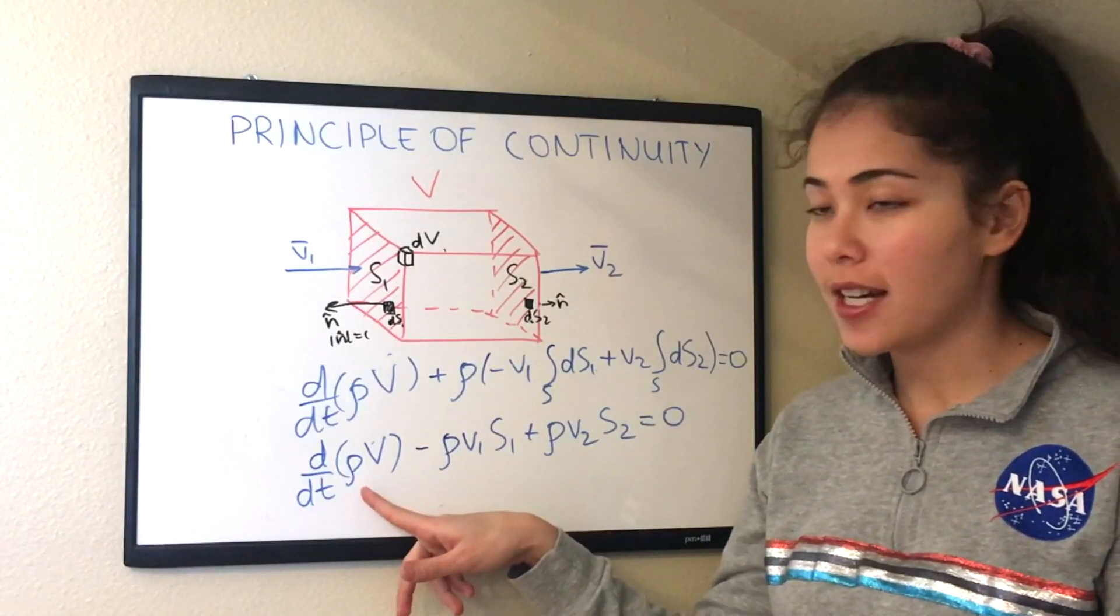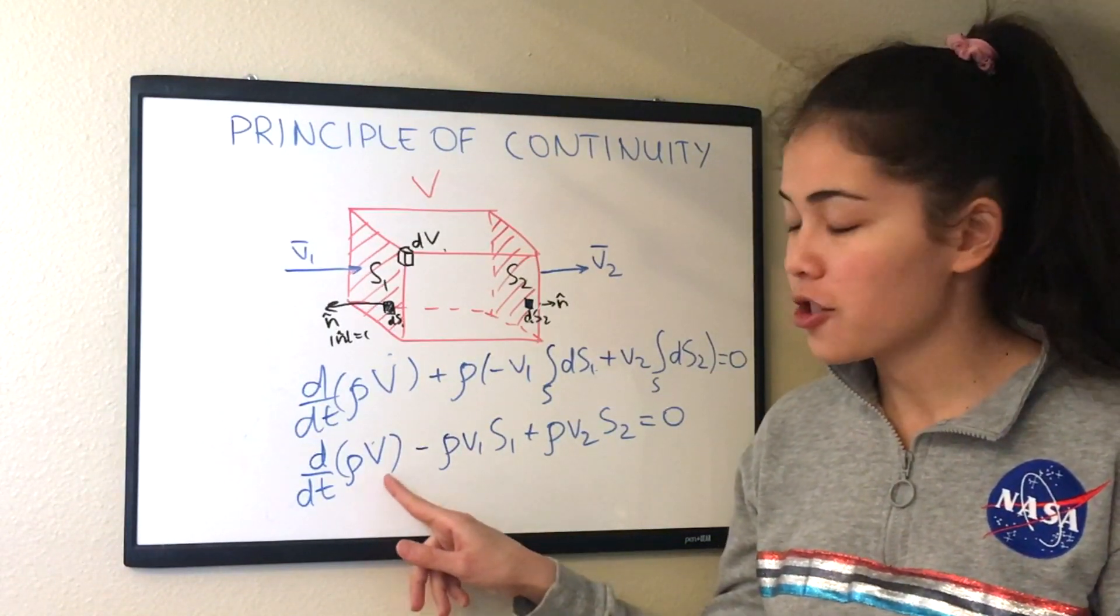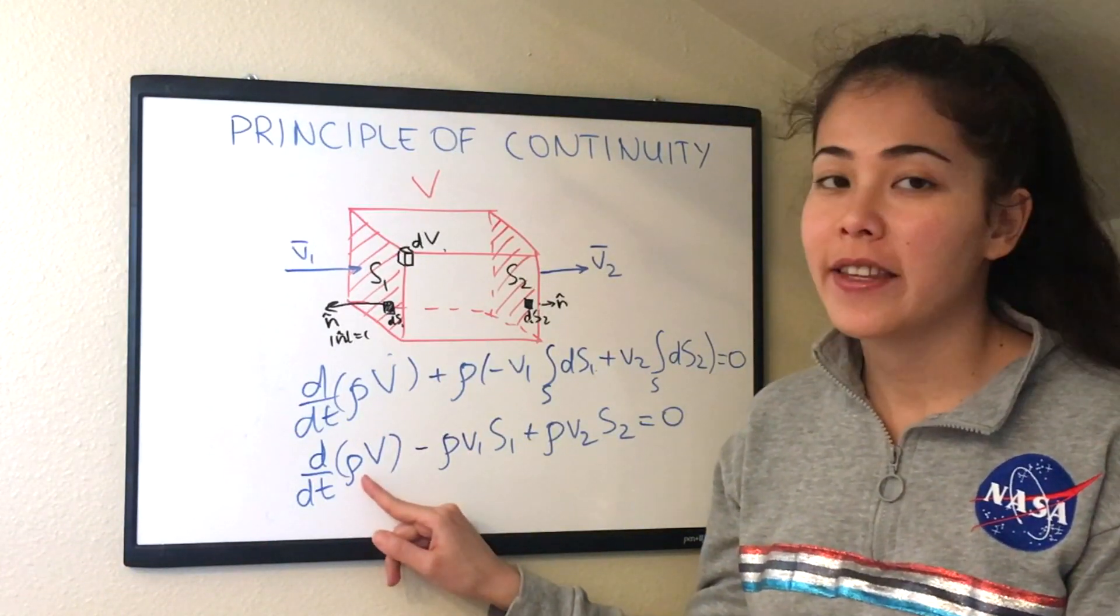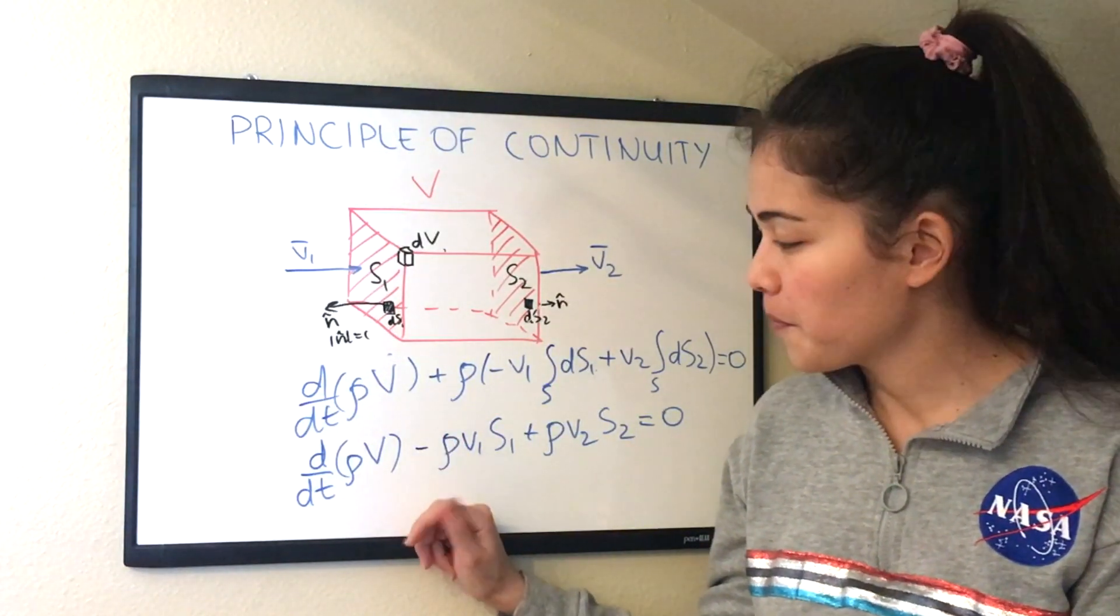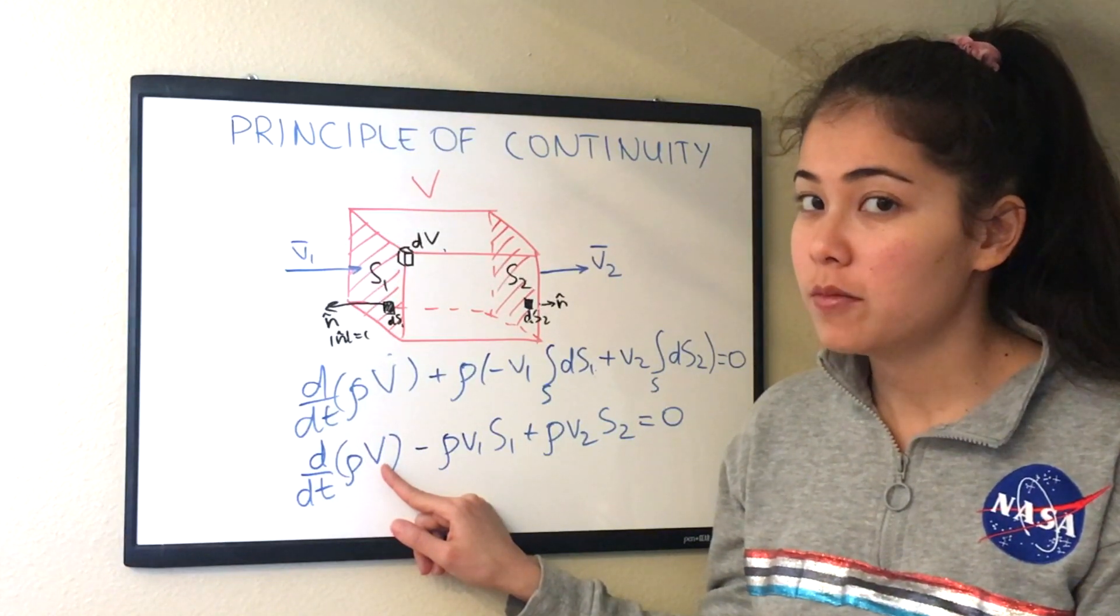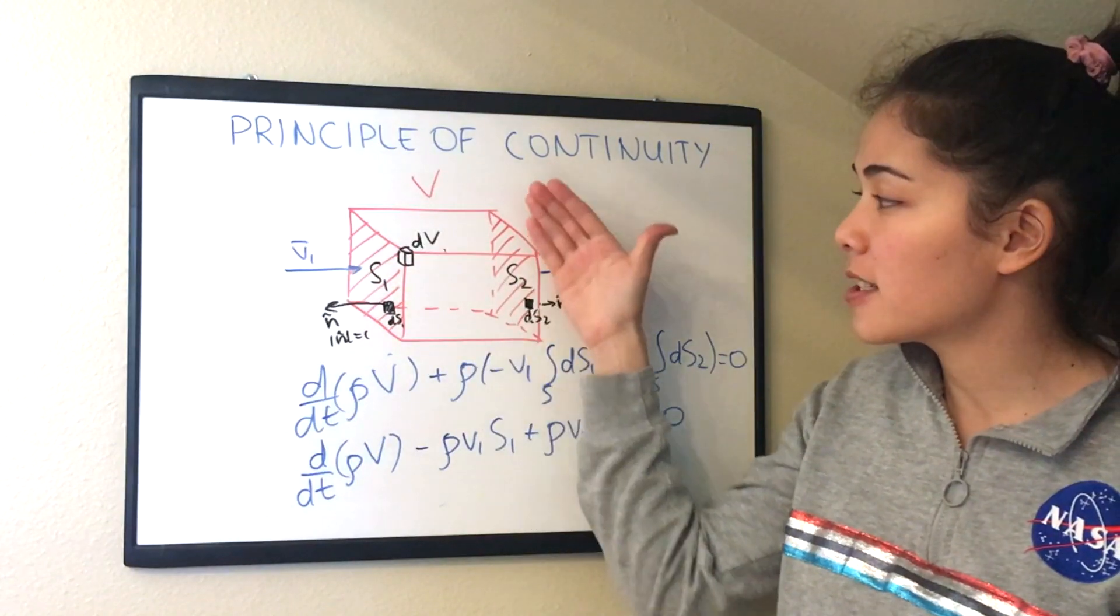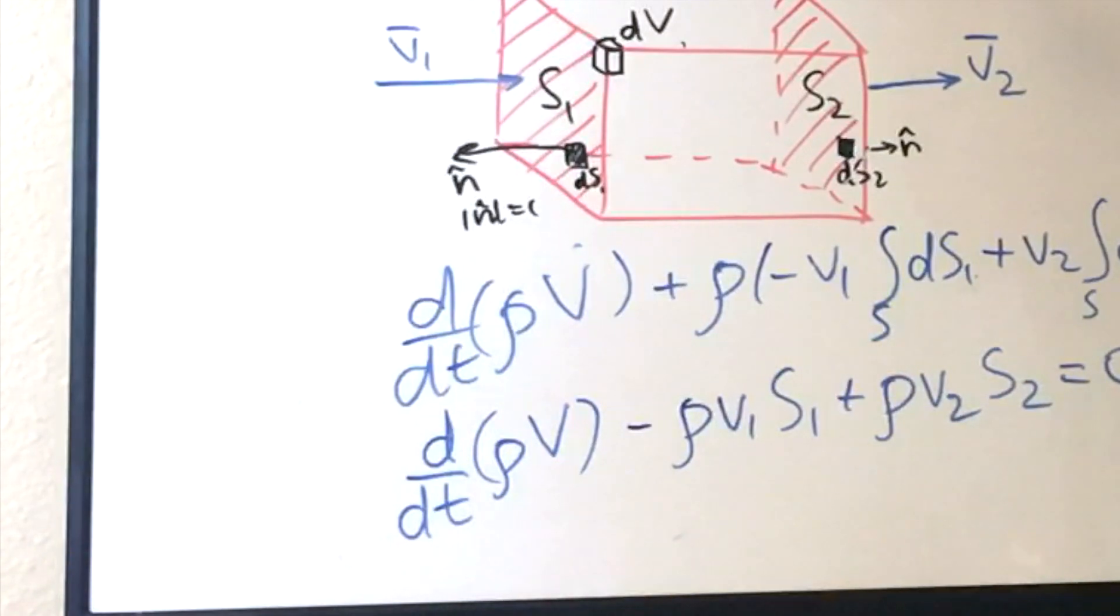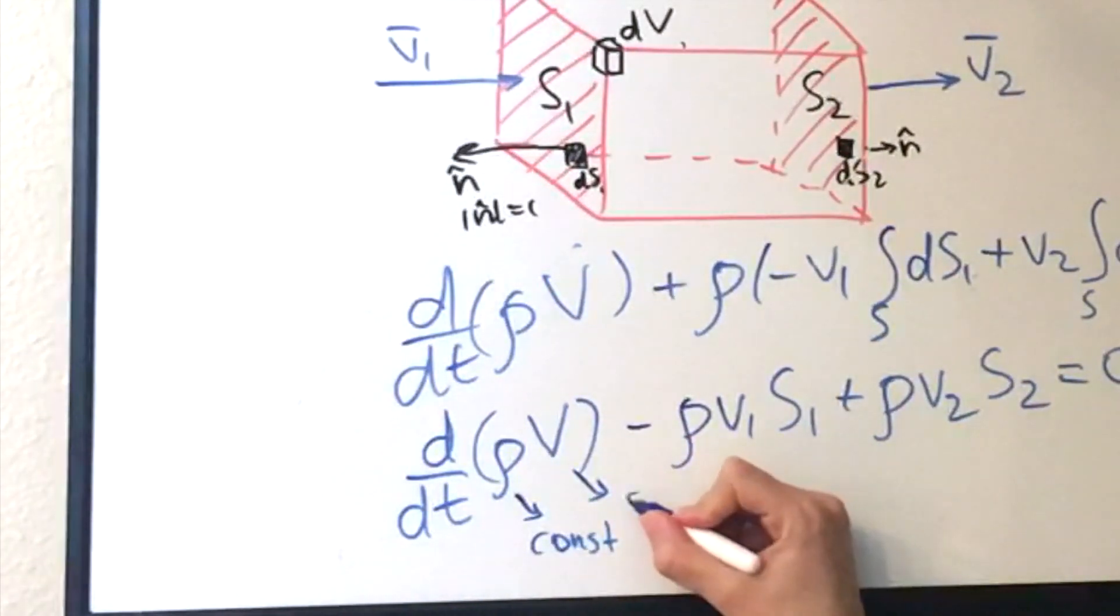And now we should look at the first term very carefully and think about what changes here with respect to time. Remember we assumed that density of air is constant because we assumed the velocity was low. And the volume of the control volume stays the same because it's not changing. We just restrict our control volume by this box. So density is constant and volume is constant.